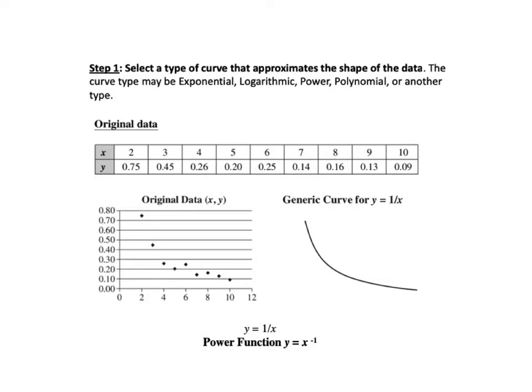Step 1 is to select a type of curve that approximates the shape of the data. The table shows the values of the XY data points to which we want to fit a curve. At lower left is a scatterplot graph of that data. Next to it is a graph of a generic power curve for Y equals 1 divided by X. Y equals 1 over X is the same as Y equals X to the power of negative 1, which is a power function.